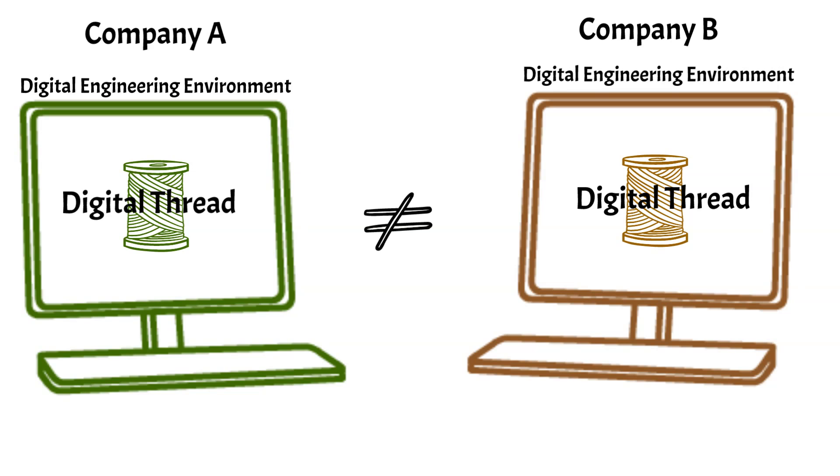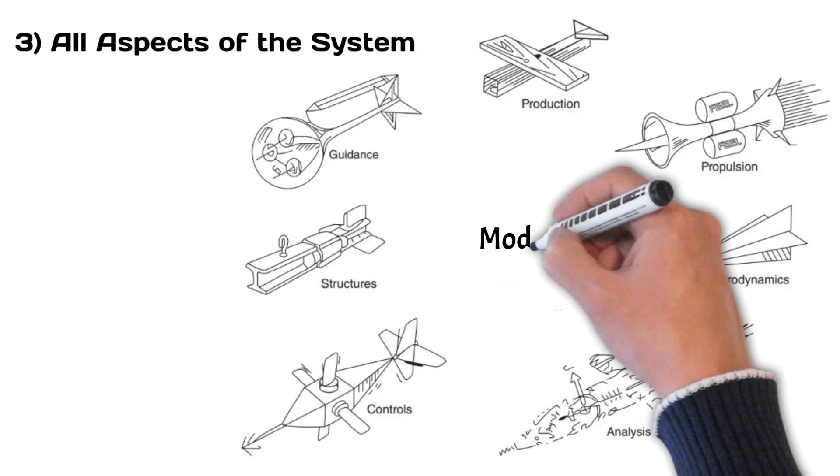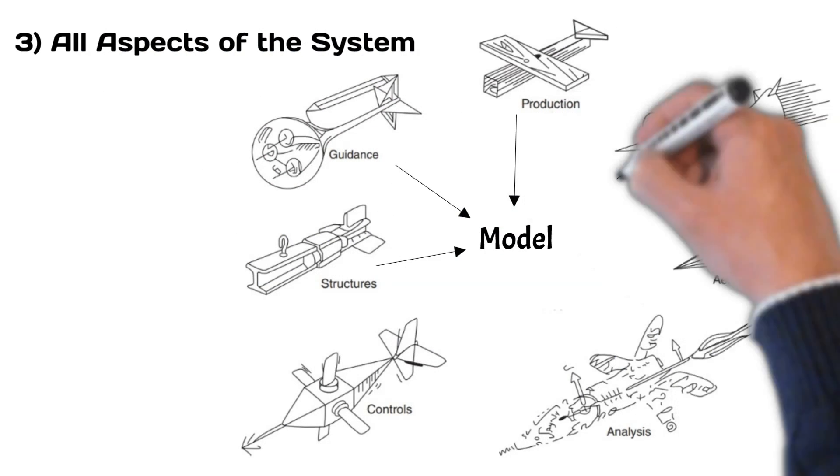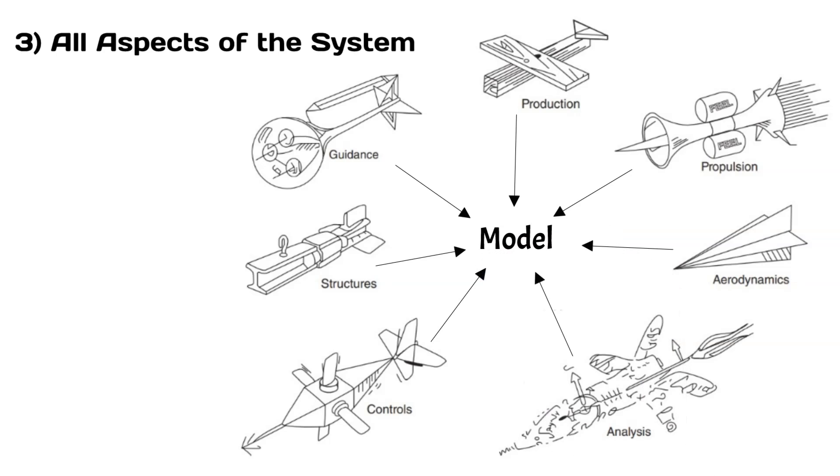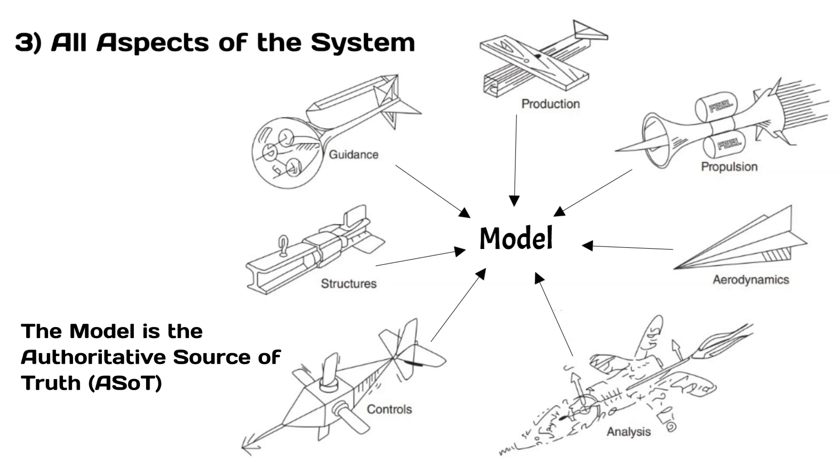Third, digital engineering covers all domains of the system of interest. This includes all of the different engineering disciplines such as aero, mechanical, software, and electrical. Digital engineering pushes for an authoritative source of truth which means that engineers publish their latest and greatest updates to the model. The model is all-encompassing of all aspects of the system and thus becomes the living latest and greatest version of data pertaining to the system of interest.